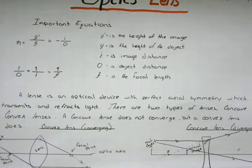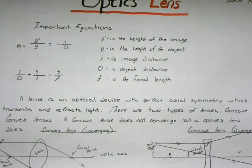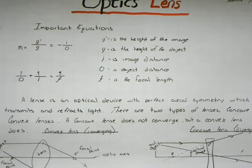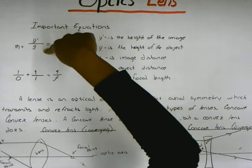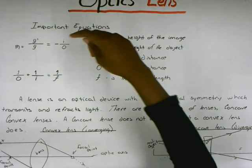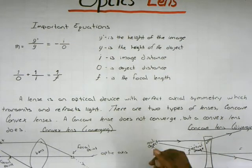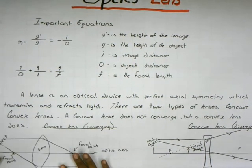The equation is M equals y' divided by y, which equals negative i divided by o. y' is the height of the image, y is the height of the object, i is image distance, and o is object distance. That's one of the equations for convex lenses.